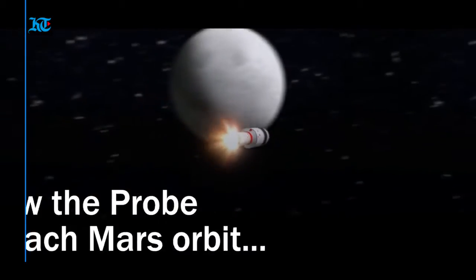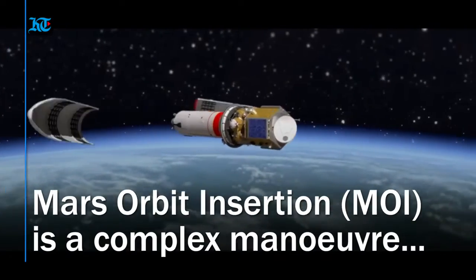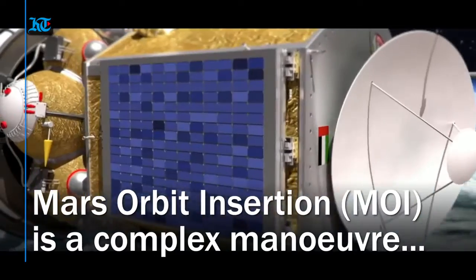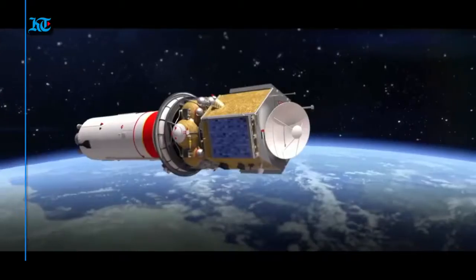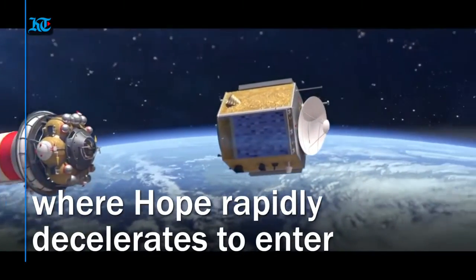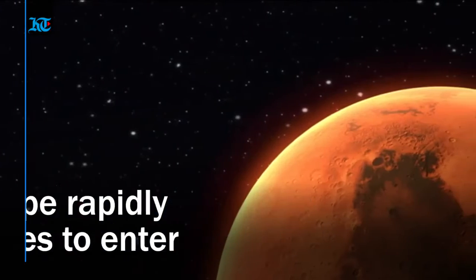This is how the probe will approach Mars orbit. Mars orbit insertion is a complex maneuver where Hope rapidly decelerates to enter a stable orbit with Mars.